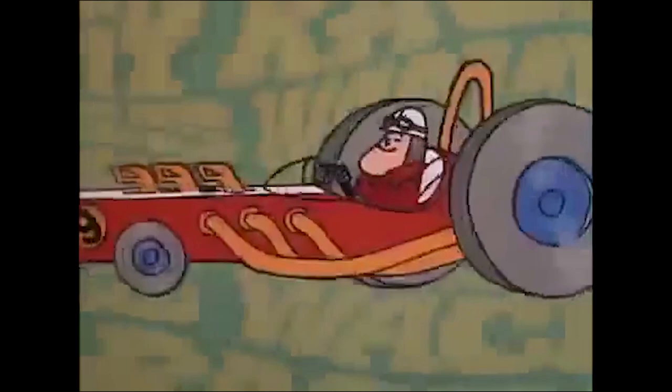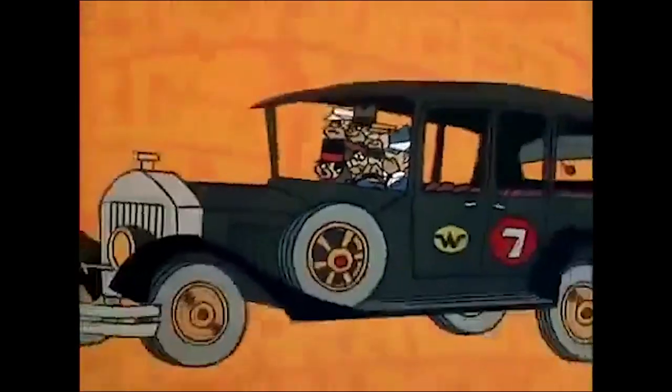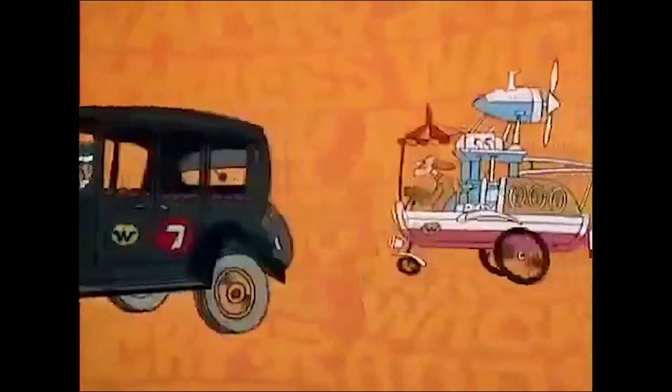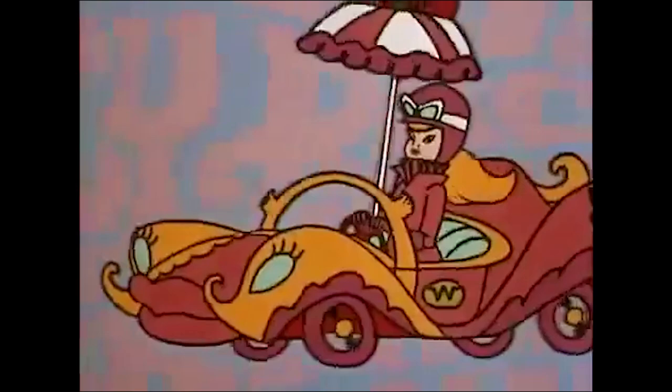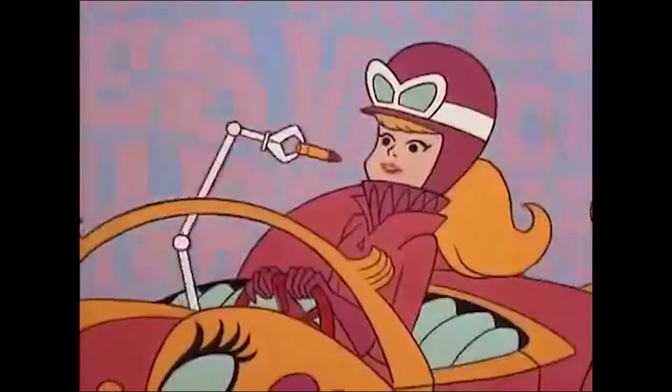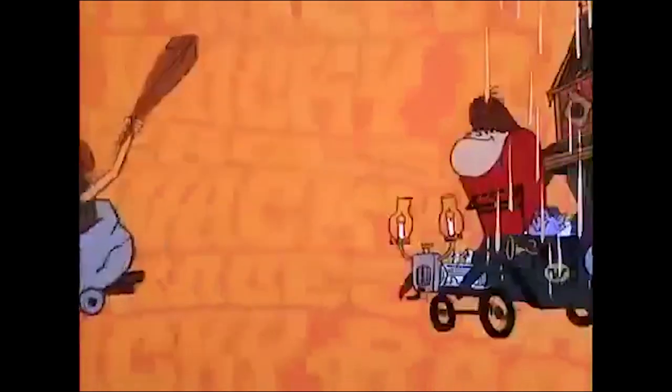The cars are approaching the starting line. First is the Turbo Terrific driven by Peter Perfect. Second, Rufus Ruffcut and Sawtooth in the buzz wagon. Maneuvering for position is the Army Surplus Special. Right behind is the anthill mob in their bulletproof bomb. And there's ingenious inventor Pat Pending in his converter car.